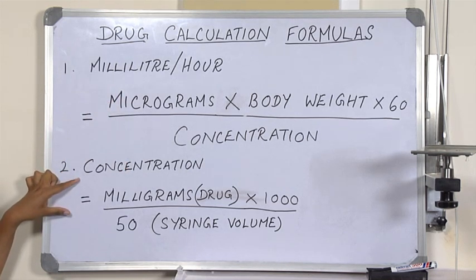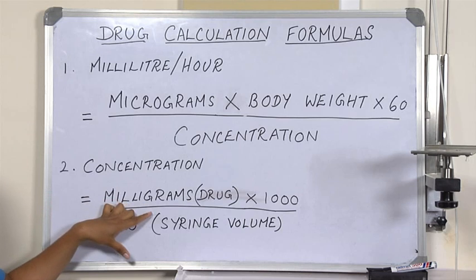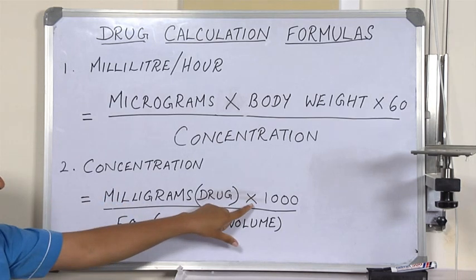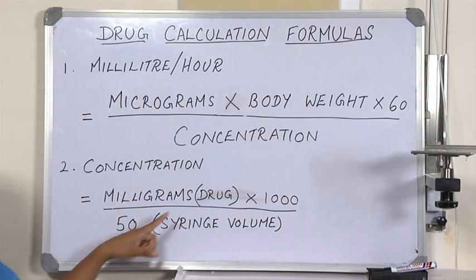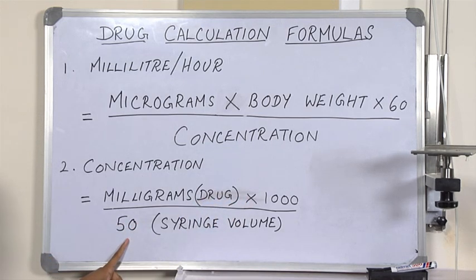To calculate the concentration, take the mg of the drug in the solution and multiply it by 1000, which is a constant. This is divided by the syringe volume, which is 50 ml. If we were using a different capacity of syringe, then this number would be different.